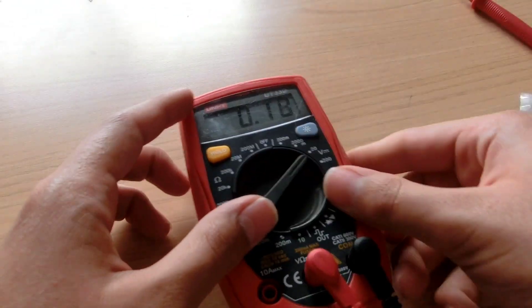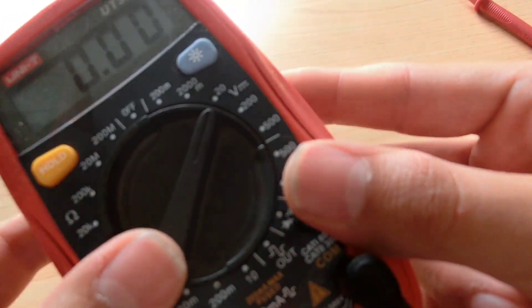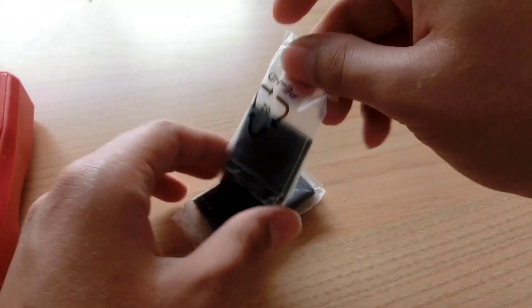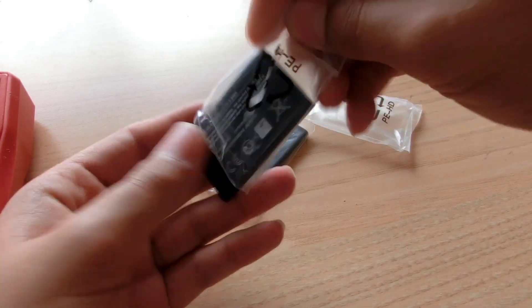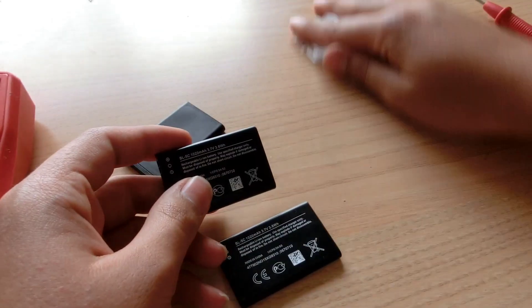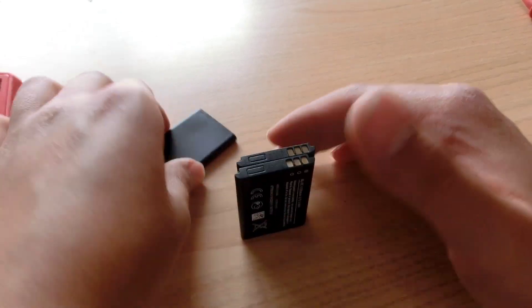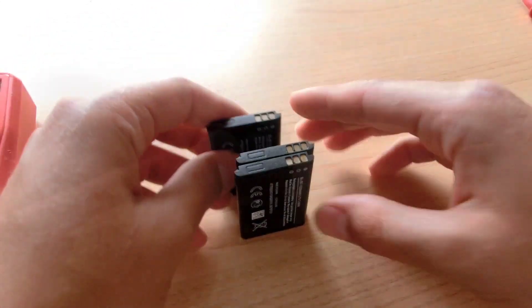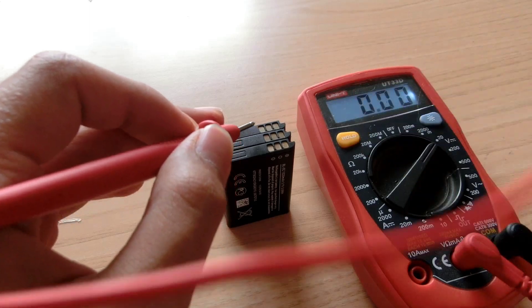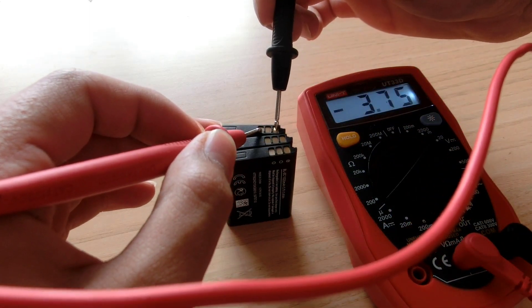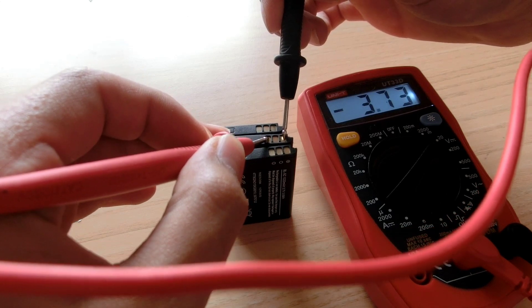Set your meter to voltage measuring mode. Take the batteries out of their wrapper and line them up. Now measure their voltages. If their voltages are the same then proceed. Otherwise charge them so that they have the same voltages.